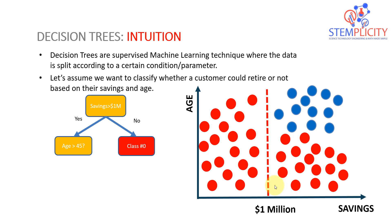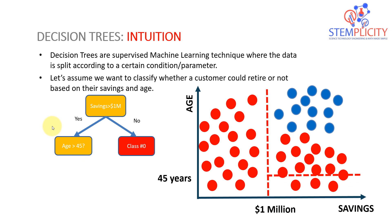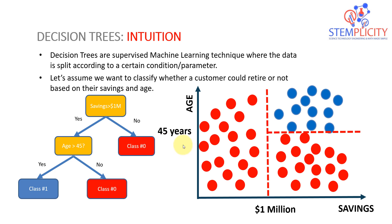Looking at the graph, this threshold at one million dollars divides the data: below this line you are class zero (red), and above one million dollars we need another criterion. The next criterion is age. The next question you ask is: is your age greater than 45? If yes, then you are class one — you are eligible to retire.